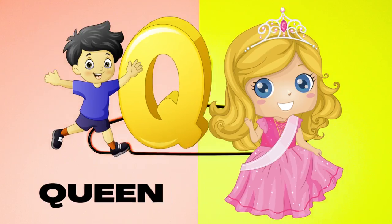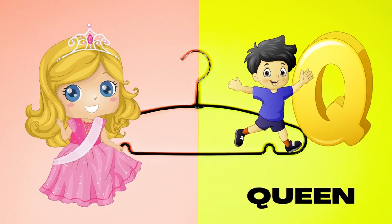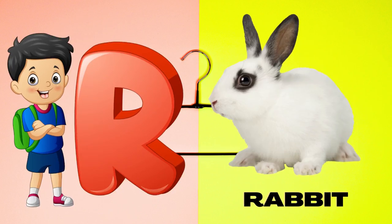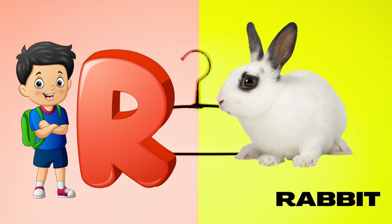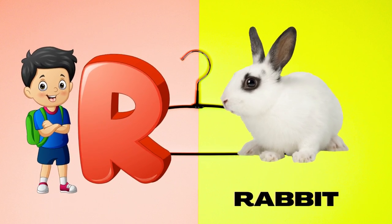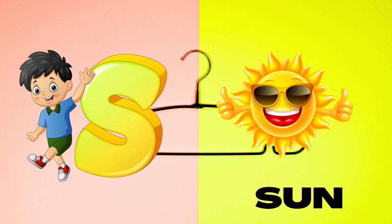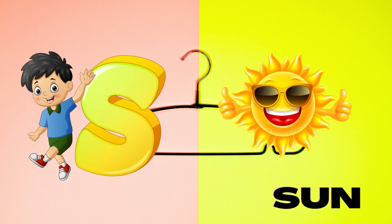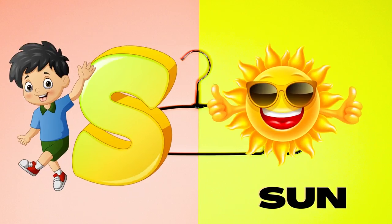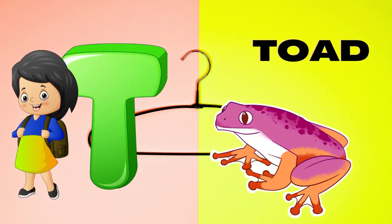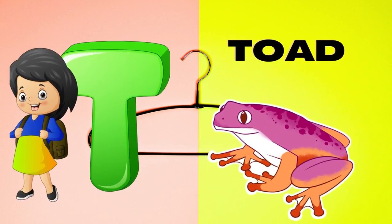Q is for queen, qu-qu-queen. R is for rabbit, r-r-rabbit. S is for sun, s-s-sun. T is for toad, t-t-toad.